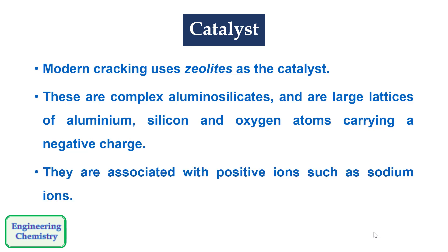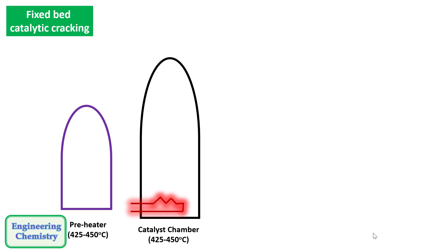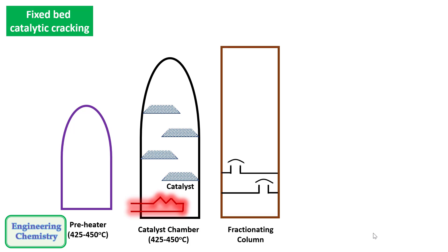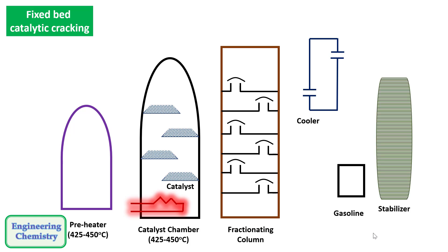In fixed bed catalytic cracking, first there is a preheater, then a catalyst chamber which consists of fixed beds of catalyst one above the other. The catalyst is in the form of fine granules — hence the name fixed bed catalytic cracking. There is then a fractionating column which separates the gasoline into three layers: upper, middle, and lower. The middle layer contains pure gasoline. After this there is a cooler to condense the gasoline, and finally the gasoline is collected and gases are removed from a stabilizer.